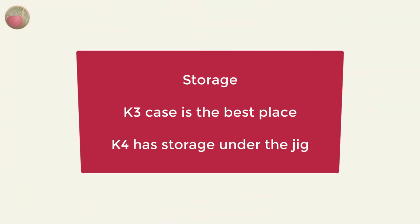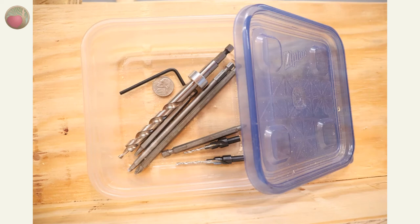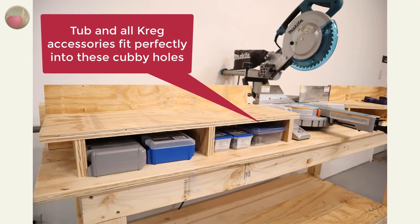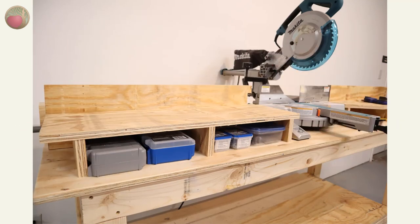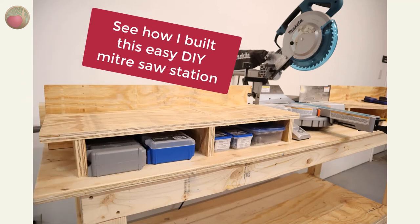Let's talk about storing your Kreg accessories. The K3 comes with a case and honestly that's the best place to keep everything. The K4 has some storage under the unit for the bit and wrench but that's not exactly handy if you keep your jig clamped down. I find a square plastic tub works perfectly. It's long enough for the drill bits when placed diagonally and the tub fits perfectly in my miter saw station cubby holes too. Be sure to come on over to Heartwood Art and see how I built this easy DIY miter saw station.